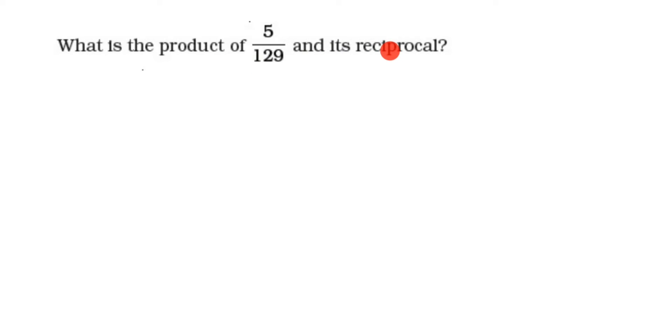What they're asking is we have to find the product - product means multiplication. We need to find the product of 5/129 and its reciprocal. We know what reciprocal is, right? Reciprocal means you interchange the numerator and denominator, so the reciprocal will become 129/5. That's it, it's very simple.